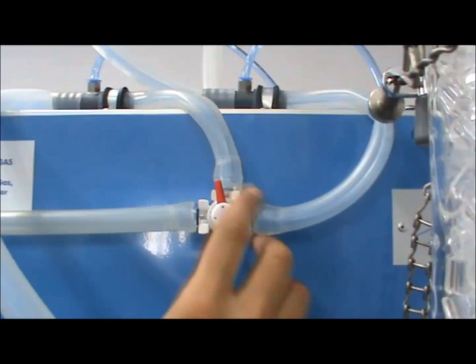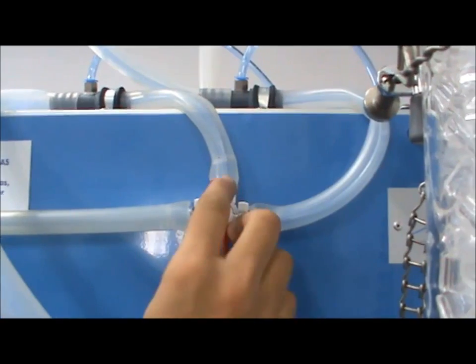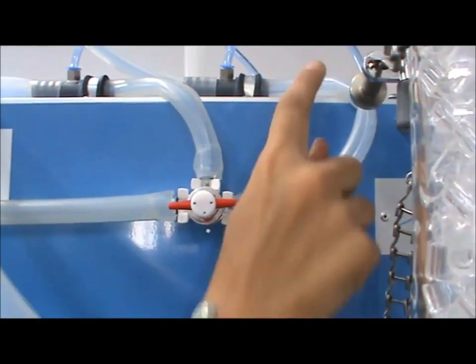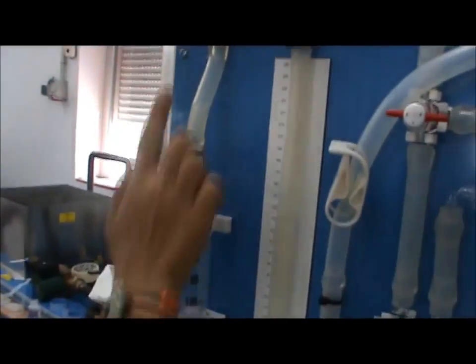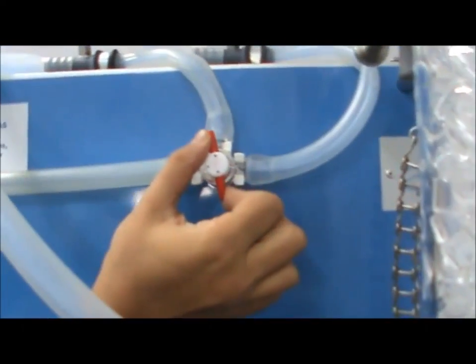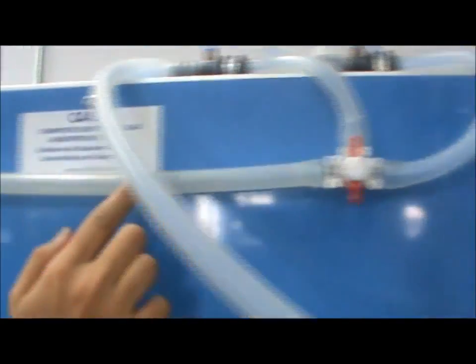Arranging valve VT1 determines where in the column samples are taken from. Positioning the valve like this, samples are taken from the upper part. In today's experiment, we will use this configuration, which takes samples from the middle of the column.